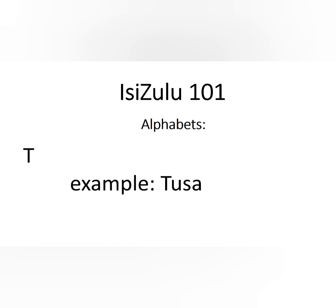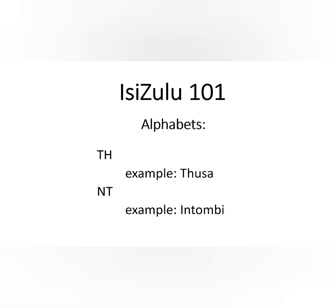Next is the letter T, which we pronounce with a pop. The example is 'usa.' T is not pronounced like English T — we only get to pronounce it when there's an H after the T. Without the H, it's a pop: 'usa,' which means 'praise' or 'give praise.' When we add an H after the T, it becomes TH. Example: 'thusa,' which means 'scare' or 'frighten.' When we add an N before the T, it becomes NT. The example is 'intombi' — a girlfriend; 'intombi' can also mean a maiden.